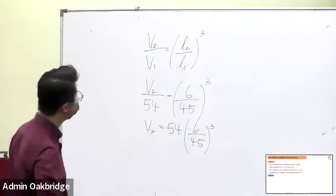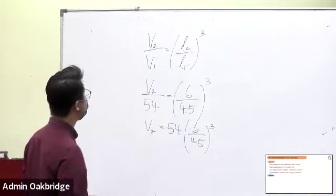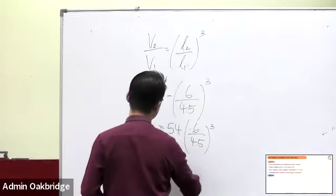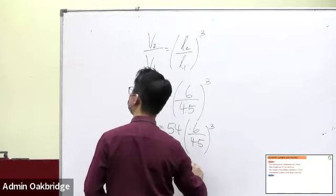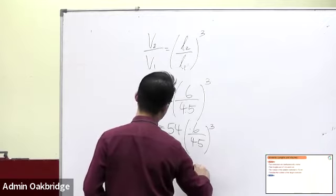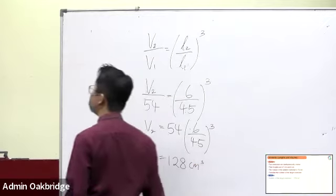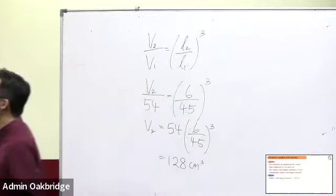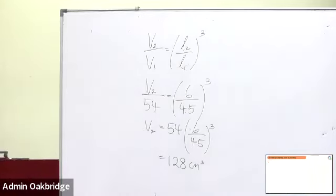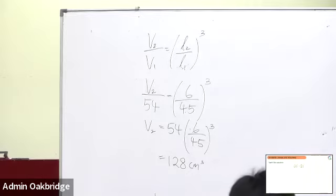The result is 128 cm cubed. Now let's look at the last one: similarity between areas and volume.